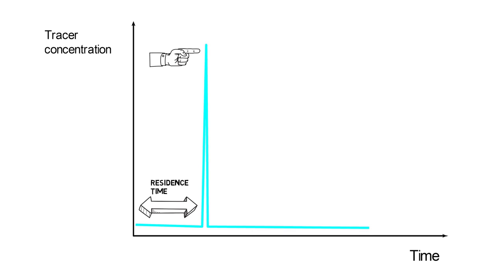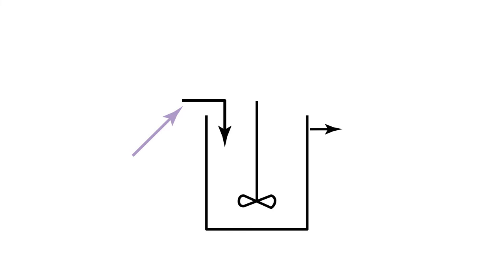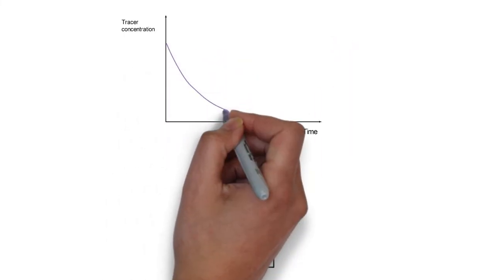We can understand intuitively that this time also corresponds to the ratio between the reactor volume and the volumetric flow rate. This is also called the space time.